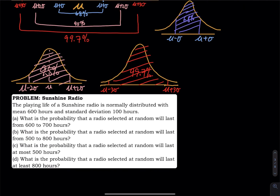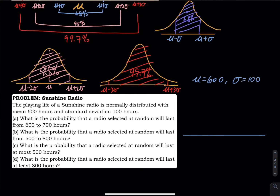Let's apply this to an example. The playing life of a Sunshine radio is normally distributed with mean mu = 600 and standard deviation sigma = 100. The empirical rule applies since this is a normal distribution. We place 600 in the middle; adding 100 to the right gives 700, and subtracting 100 gives 500.